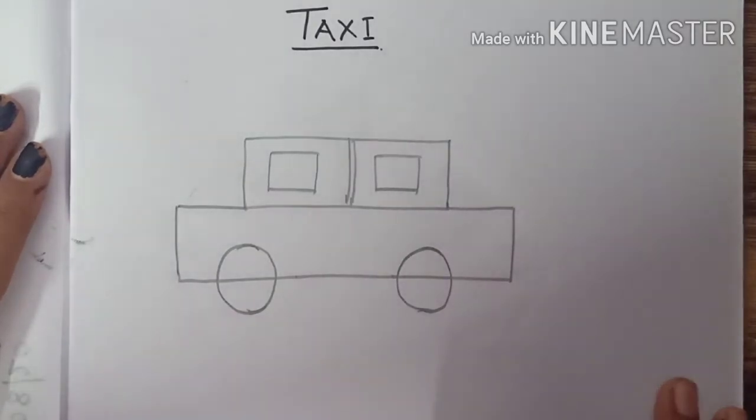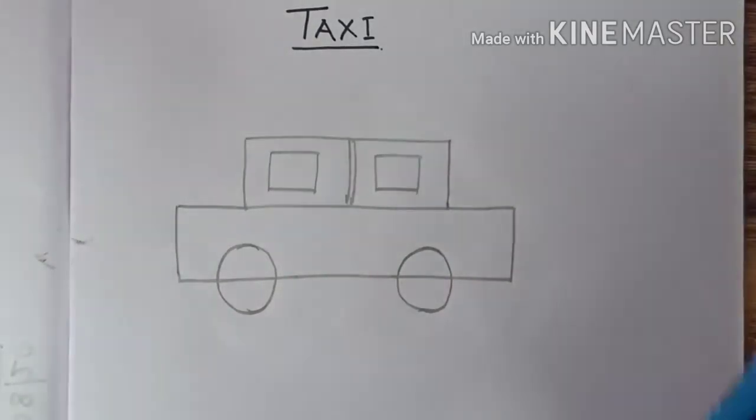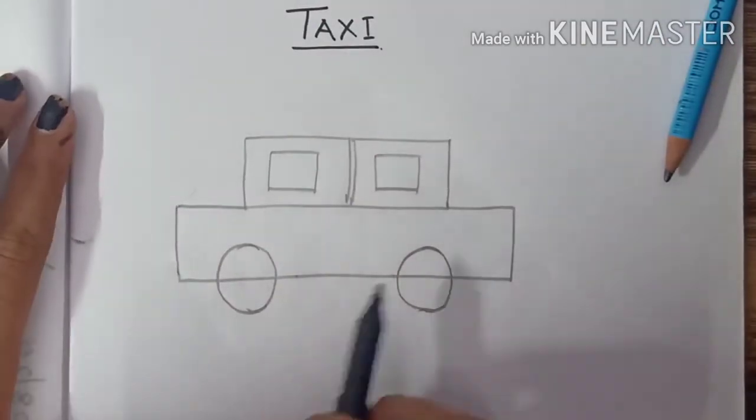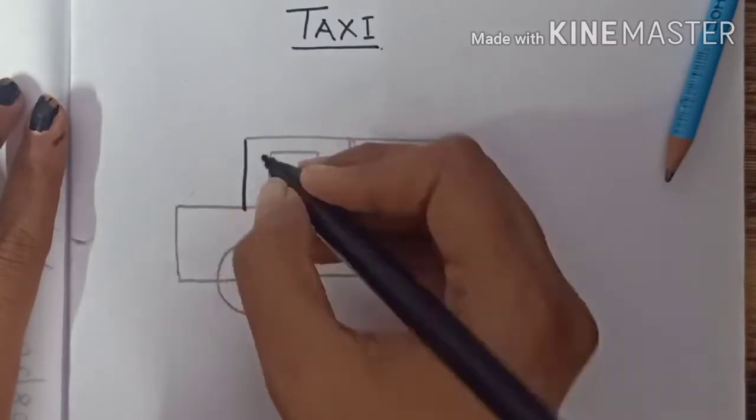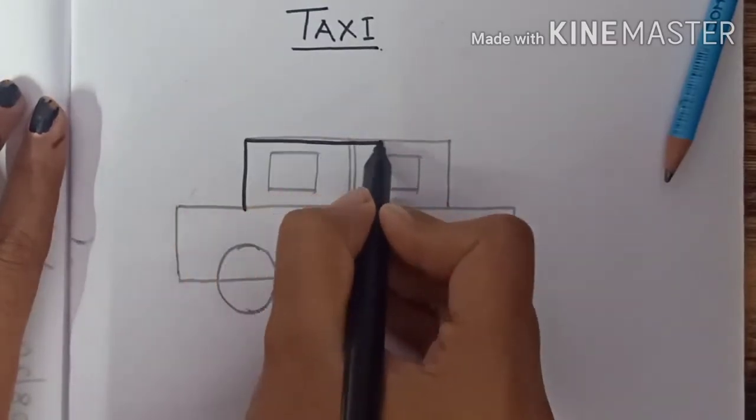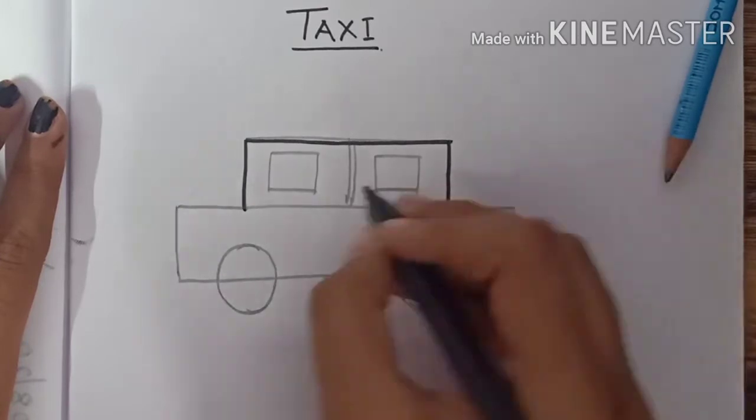Okay, now what we will do, we will take a marker or a sketch pen and we are going to darken. Look how I am doing this, very slowly.